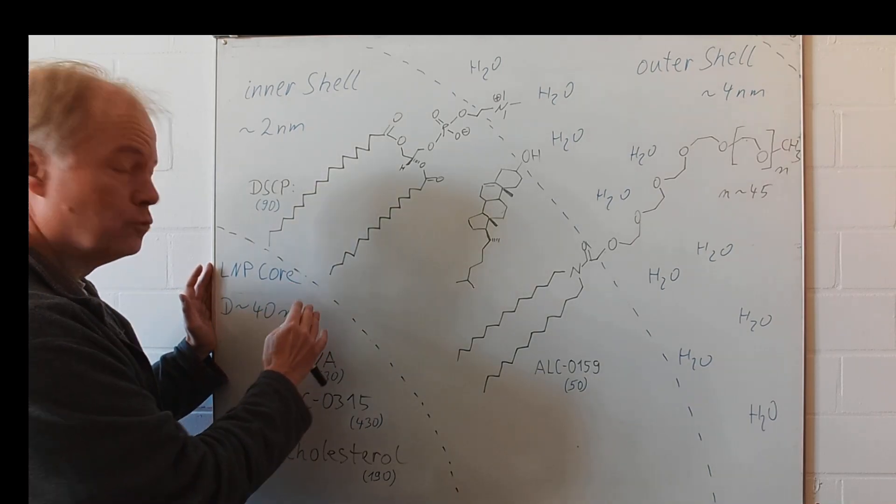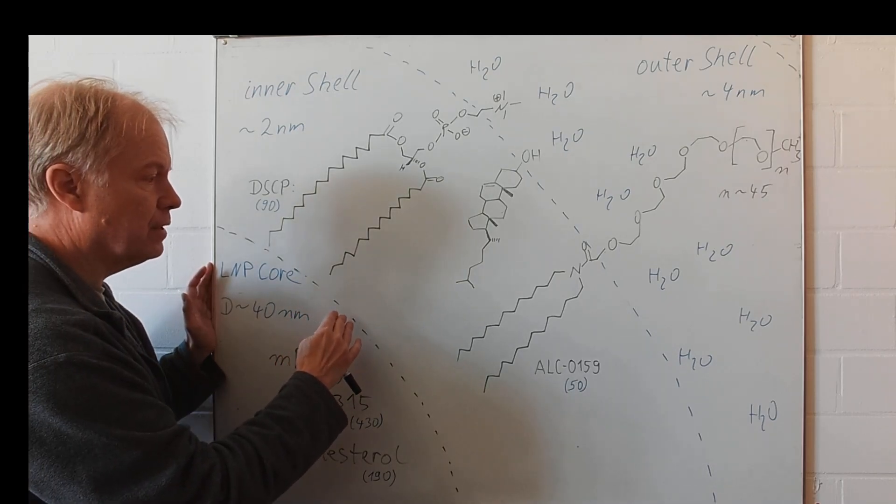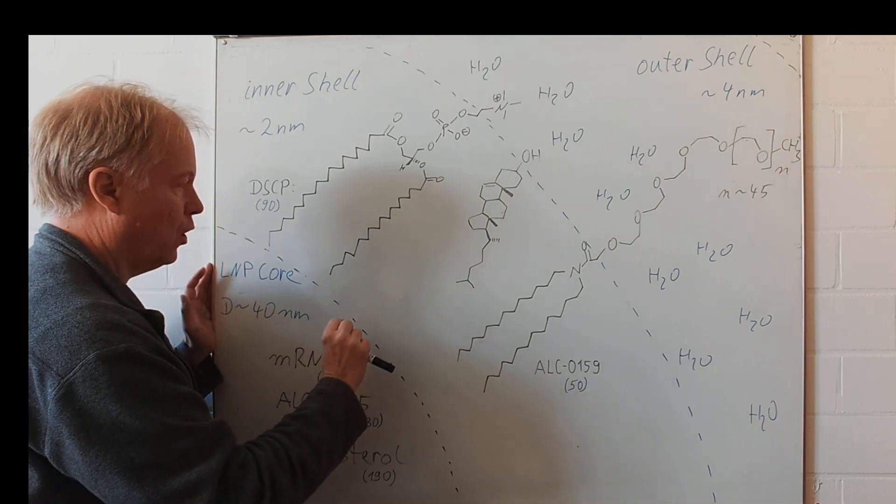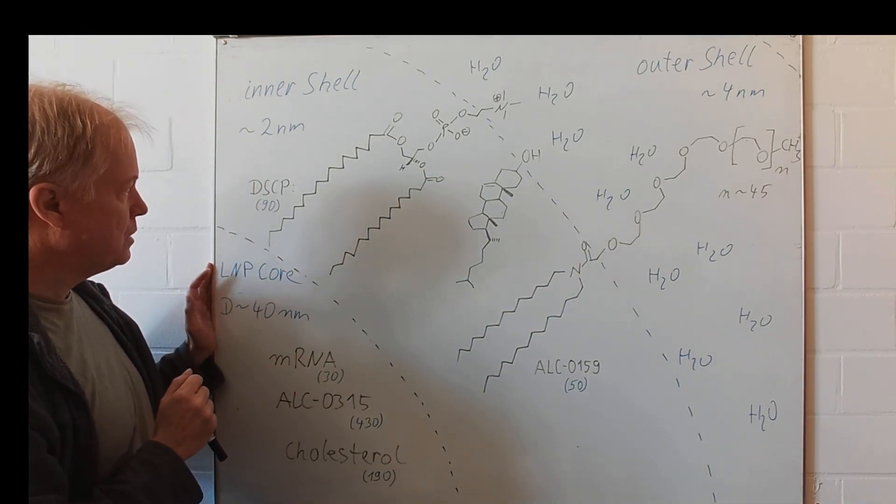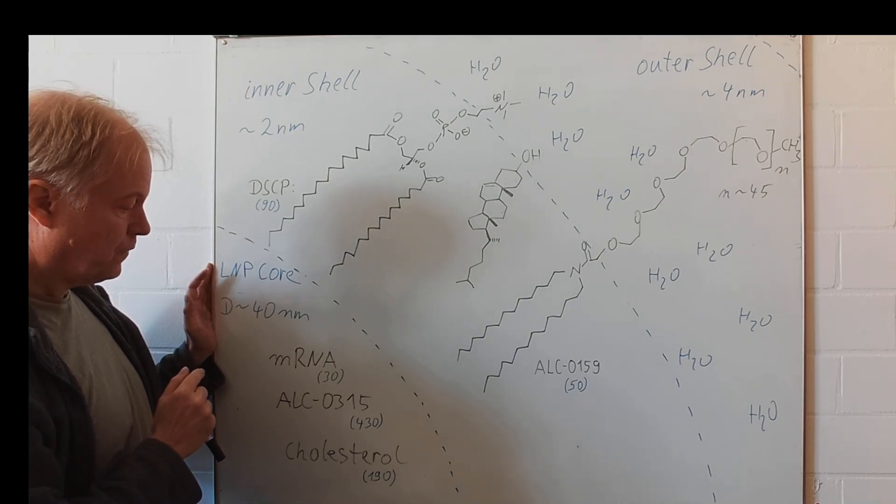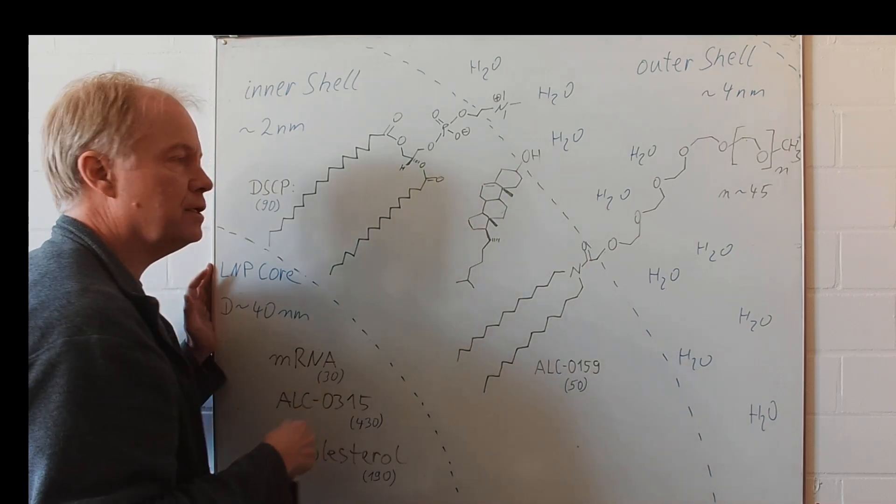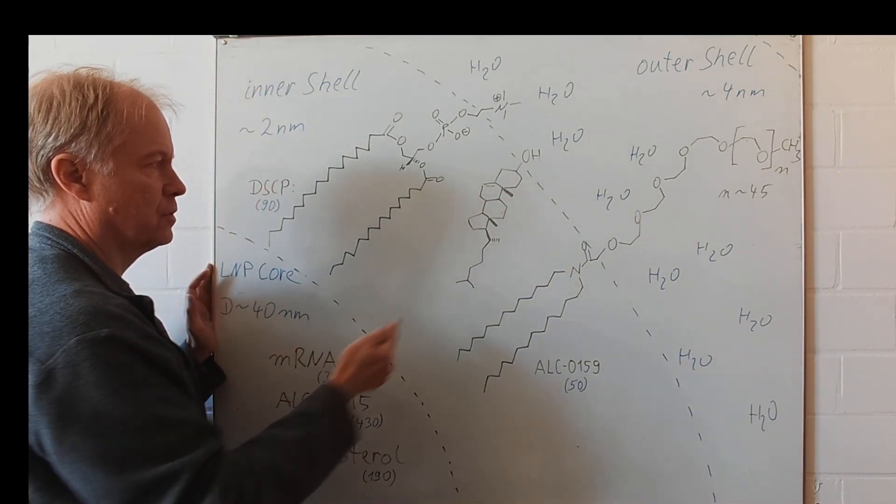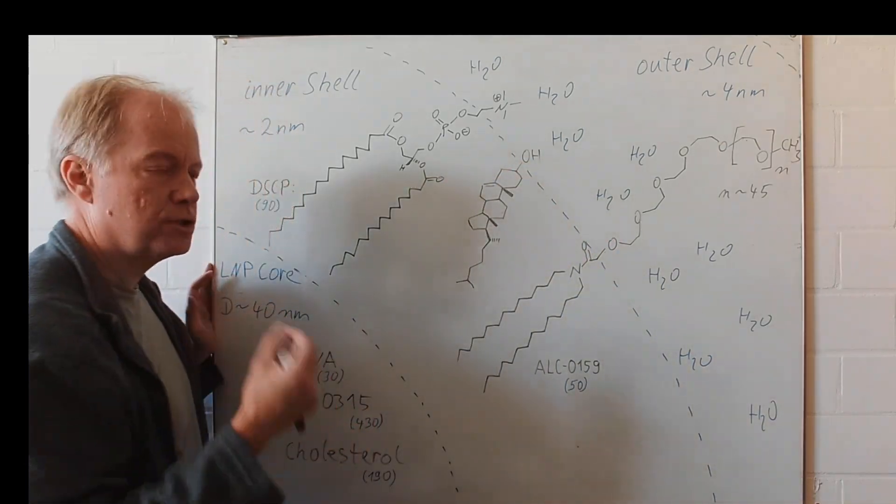Unruh and his co-workers found out, then, there is a shell, an inner shell, of about two nanometers in diameter, where we find, besides the cholesterol, here we have its structure, as you can see, it is some kind of steroid.